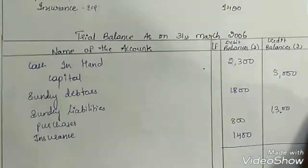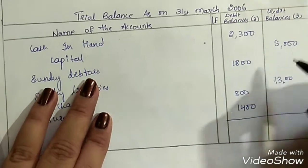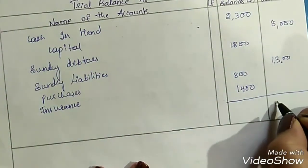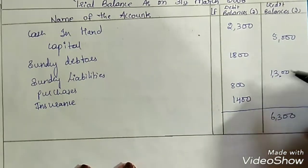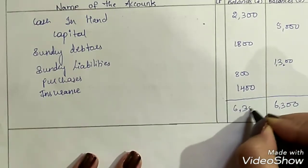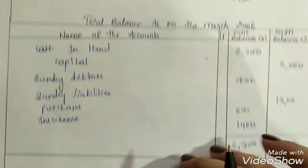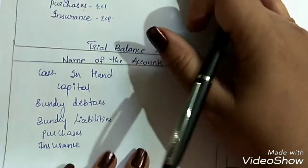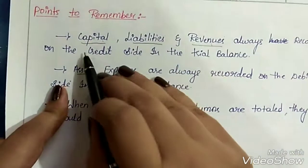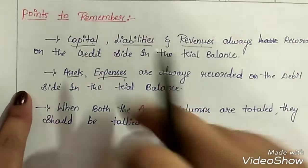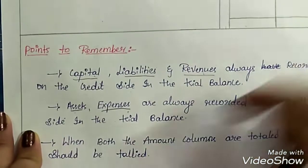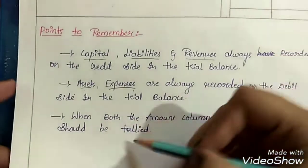Now recording is done. We need to total it — when we total, both sides should tally. On the credit side we have rupees 6300, and on the debit side it is also rupees 6300. Since they tally, it means the problem is correct. Remember: capital, liabilities, and revenues go on the credit side, and assets and expenses go on the debit side — this makes it very easy to solve the problem. This was all about the concept of trial balance. In my next session, we will discuss certain problems on trial balance.